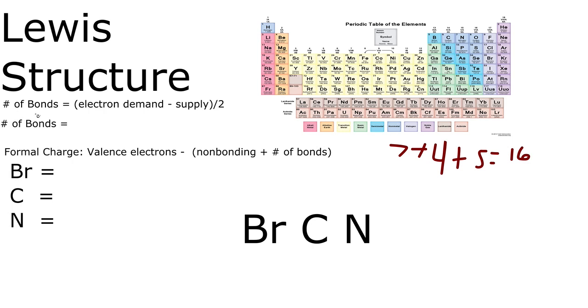This formula lets us know how many bonds will be in this molecule. So where's our electron demand? We want each of these atoms to have an octet. So it's 8 electrons around here, 8 electrons around here, and 8 electrons around here.